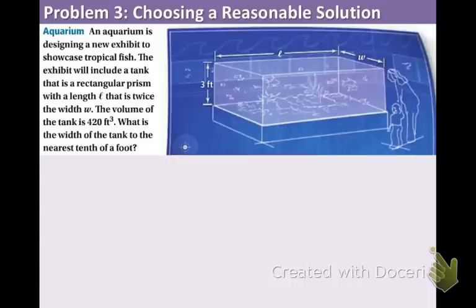Here is a real-life application problem about an aquarium. An aquarium is designing a new exhibit to showcase tropical fish. The exhibit will include a tank that is a rectangular prism with a length L that is twice the width W. The volume of the tank is 420 cubic feet. What is the width of the tank to the nearest tenth of a foot?